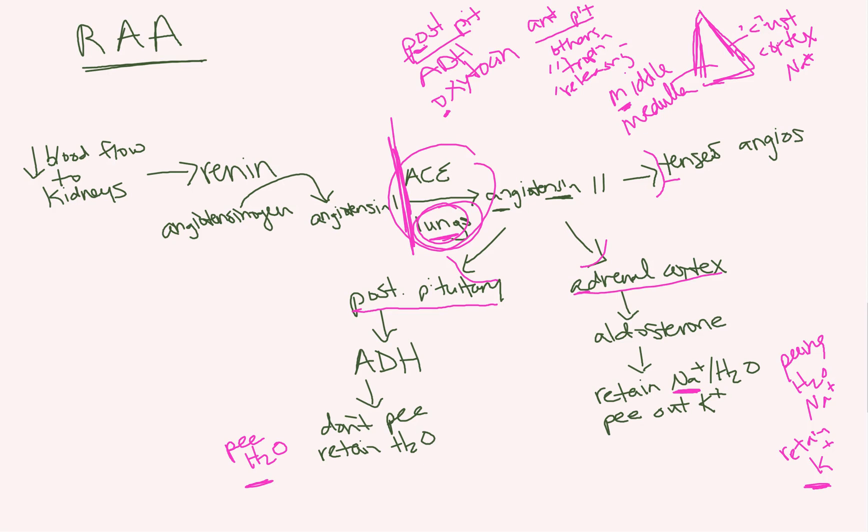So one more thing I'd like to throw on here is why we might use ACEs and ARBs for congestive heart failure. Because they're used for blood pressure and that's because it prevents you from tensing your angios and also is sort of a diuretic. It makes you pee out your sodium and water. But it's used for CHF, which is really important. So let's talk about what happens in this normal pathway in someone with congestive heart failure.